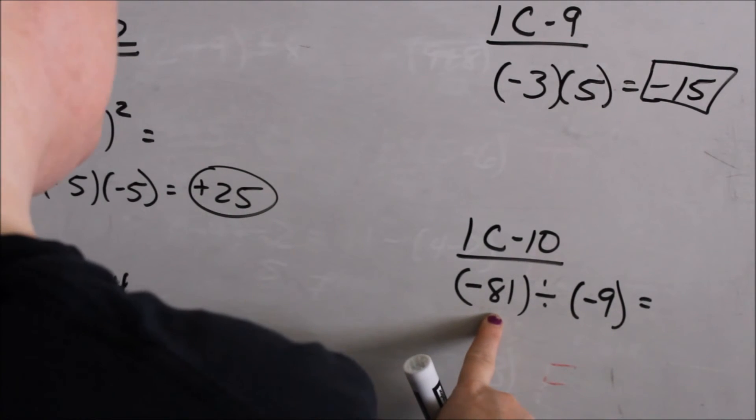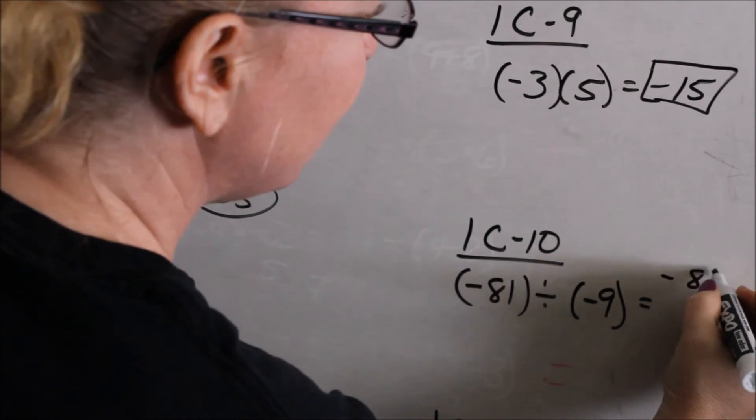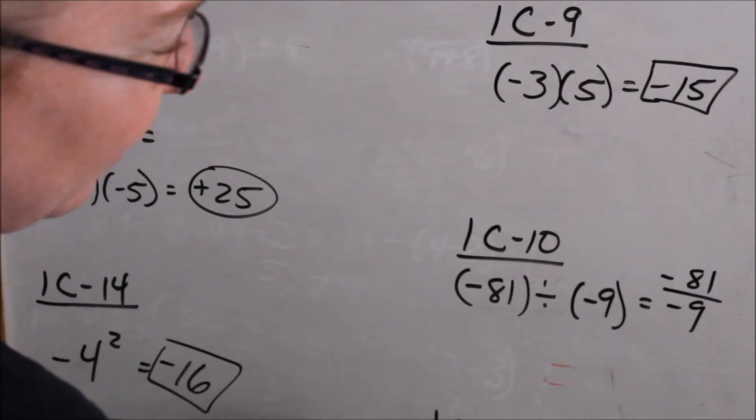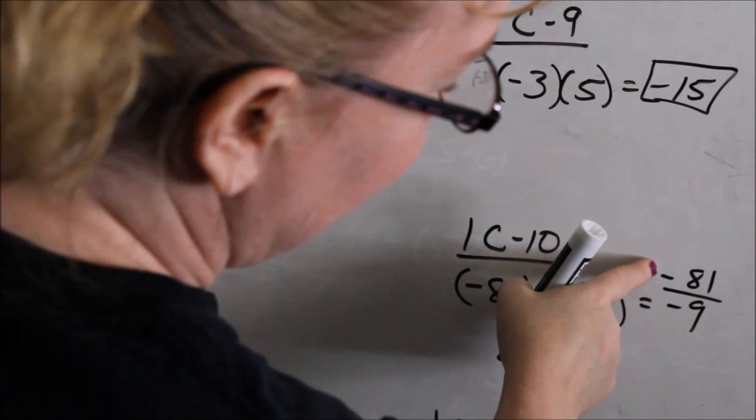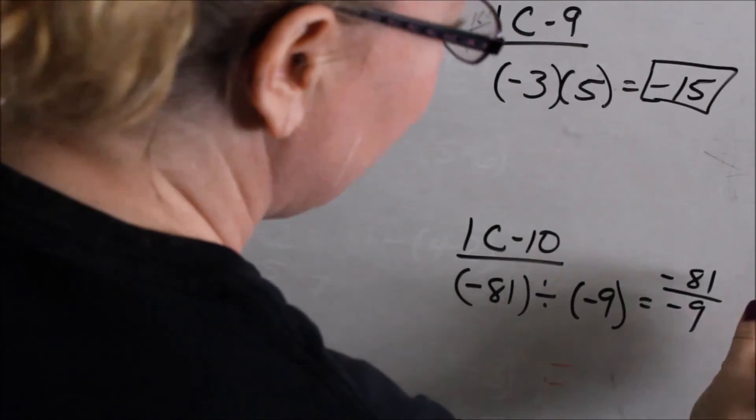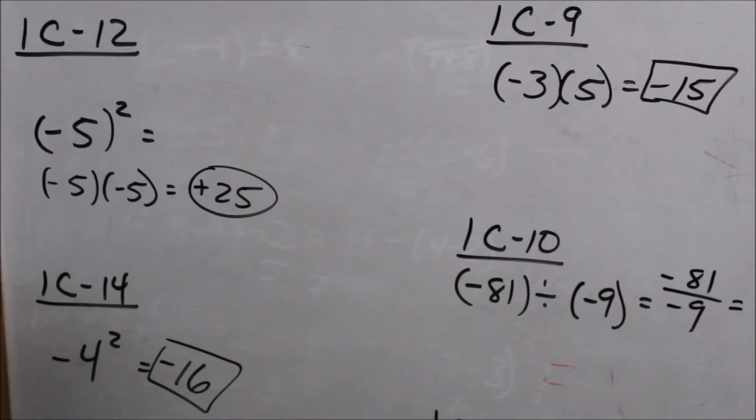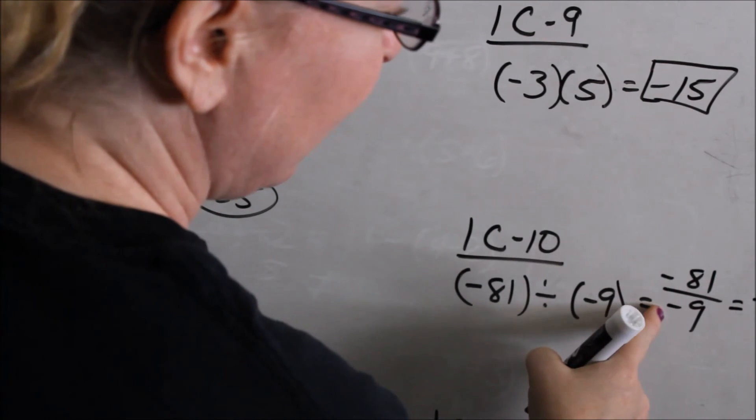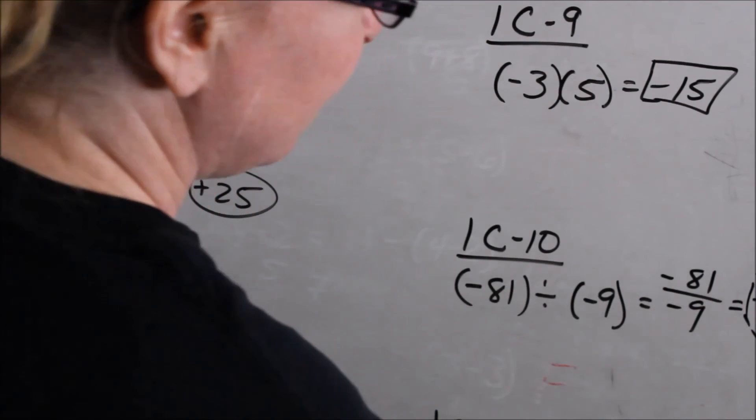Looking at 1C10, you have negative 81 divided by negative 9. I like to rewrite it as a fraction or write it like this as a division. Negative 81 divided by negative 9. A negative divided by a negative is a positive. Remember I just said, in math, two wrongs make a right. Only in math, so that would be a positive. Negative divided by a negative is a positive. And 81 divided by 9 is 9. So that would be a positive 9.